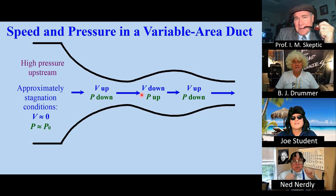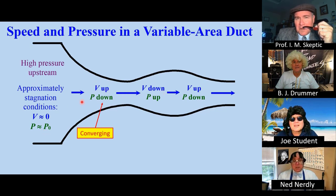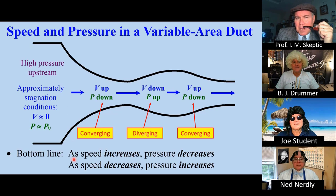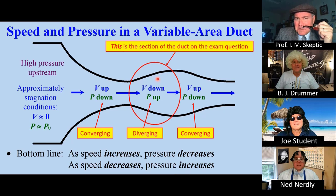This is what drives the flow. But in each section, pressure can go up or down. In the converging part, velocity goes up and pressure goes down. In the diverging part, velocity goes down and pressure goes up. This part is also converging. The bottom line is that as speed increases, pressure decreases. And as speed decreases, pressure increases.